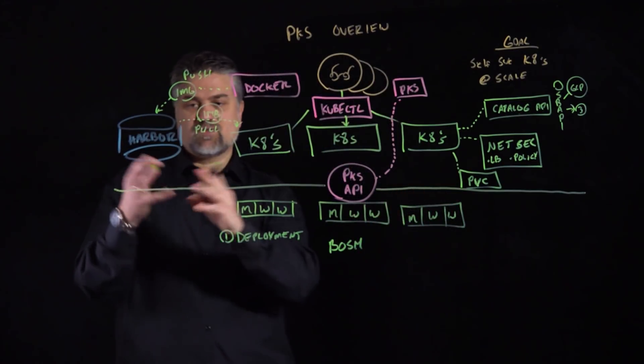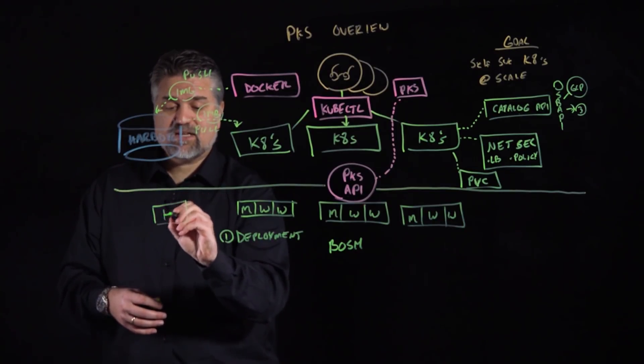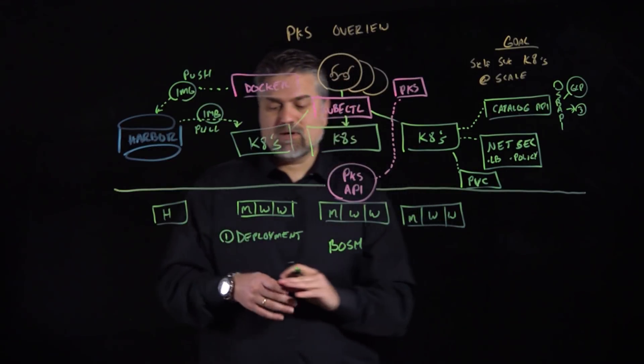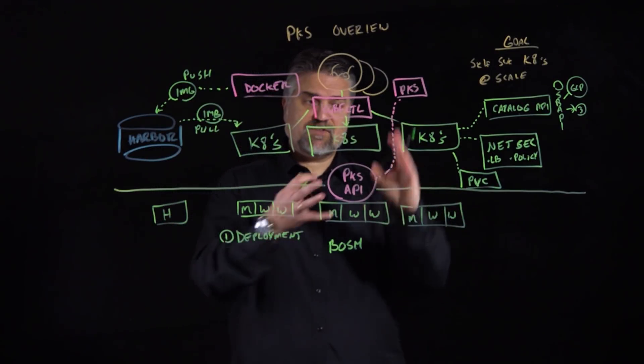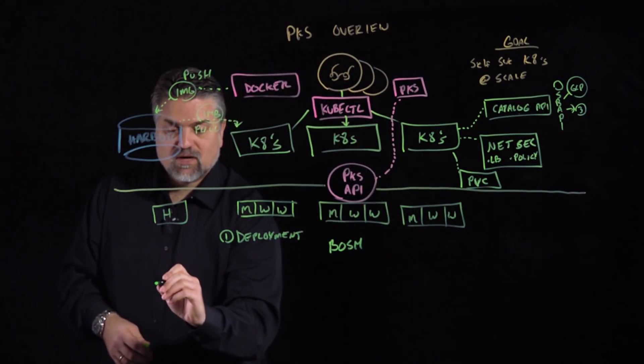Now it's not just about the Kubernetes clusters. We talked about the Harbor service. We'll also have Bosh managing the instances for this Harbor service as well. And notice I used the term manage instead of deploy. So Bosh deploys all of these for us, via request from either the Kubernetes API or a tool that we call Opsman.